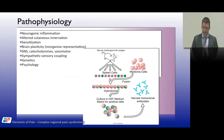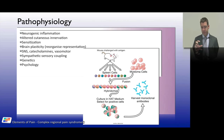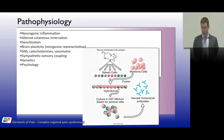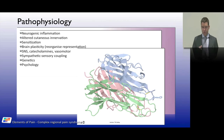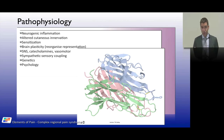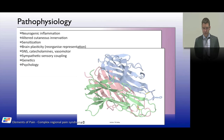Monoclonal antibodies targeting tumor necrosis factor — specifically infliximab, which is generally used for inflammatory bowel disease — have also been used to treat CRPS. This reflects the significant role of neurogenic inflammation in the pathogenesis of CRPS.